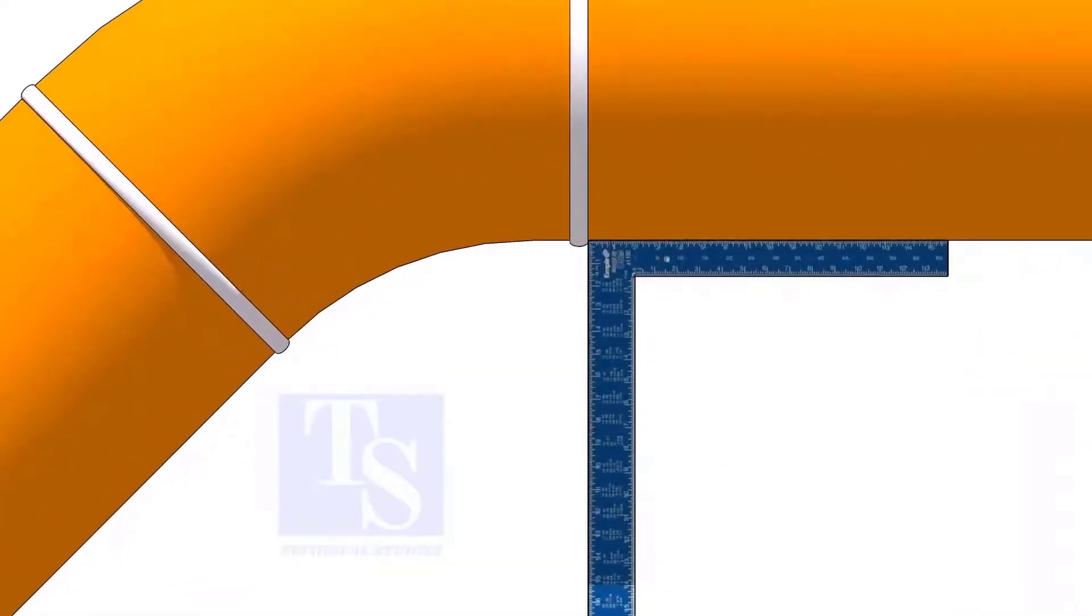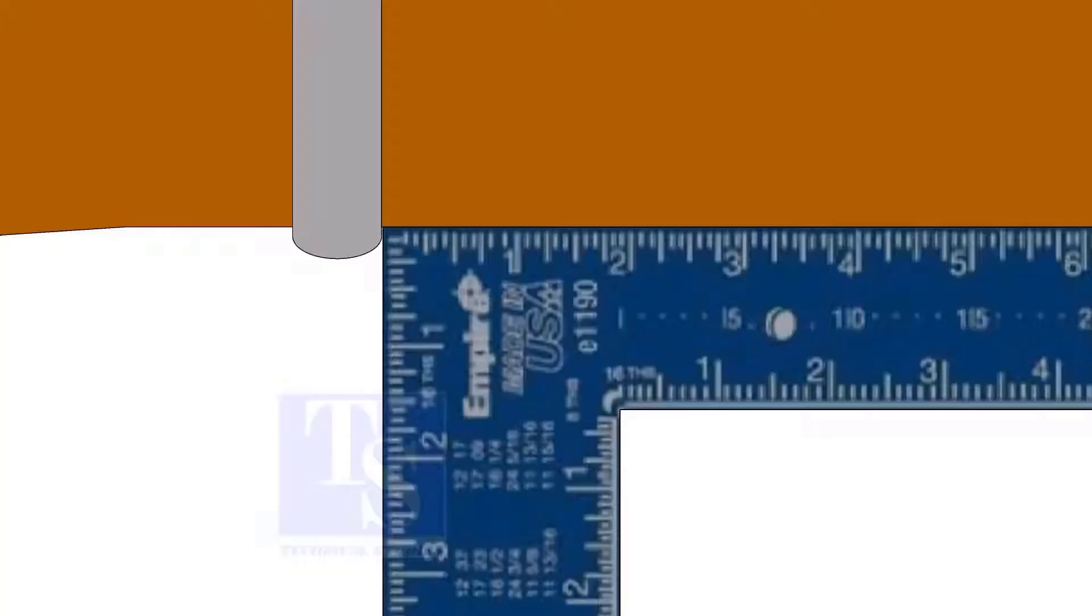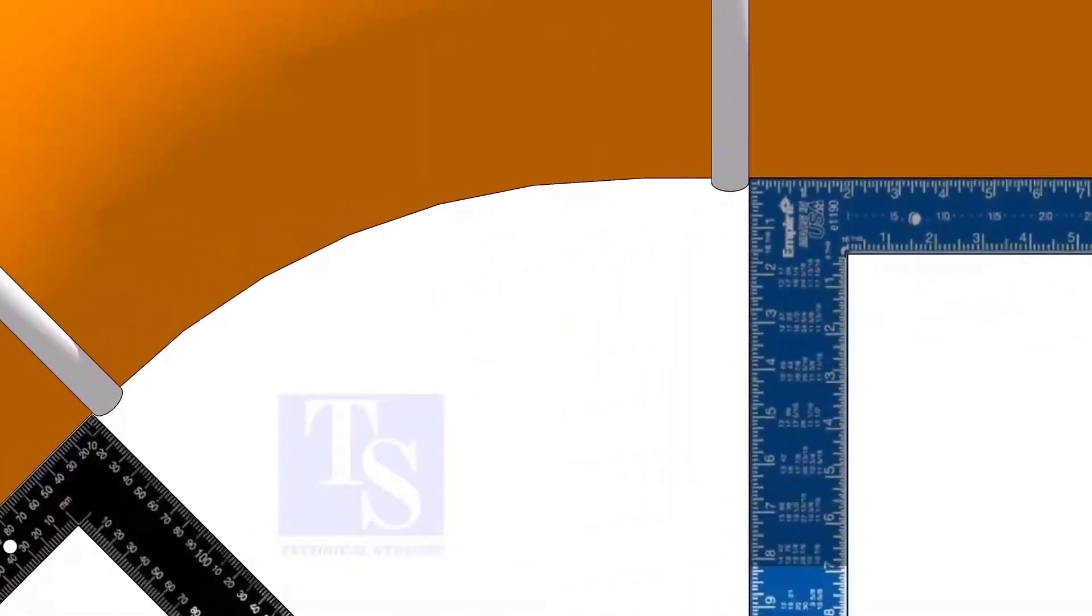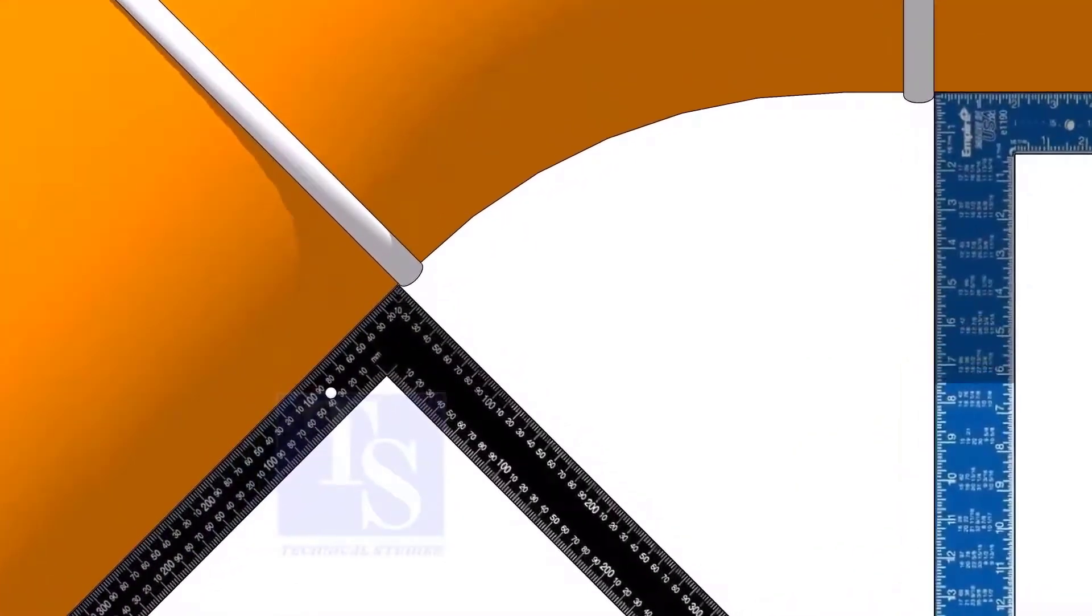Hold one right angle on the pipe, just outside the weld joint, as shown. Hold another right angle on the other pipe. Make sure both right angles are sitting at the center of the pipe.